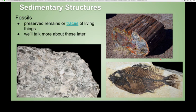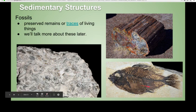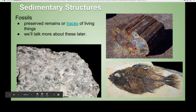Fossils are another type of sedimentary structure, and they are a quick way of determining the depositional environment. Here's a shell hash where you have a fossiliferous limestone just chocked full of shells — a good indicator that this formed in some kind of shallow marine environment. Here's a piece of petrified wood, and this is one of the famous Green River fish. Fossils are preserved traces of what used to be living, and we'll talk more about them later.